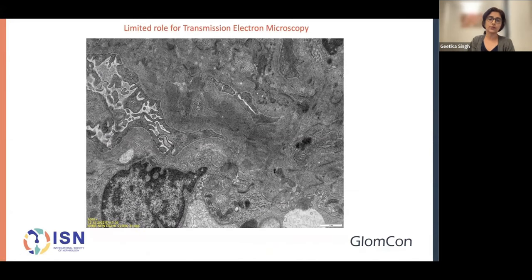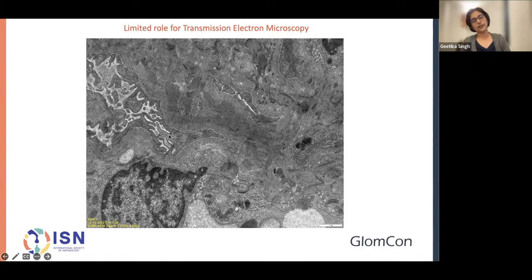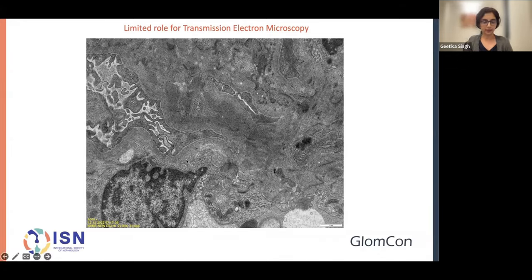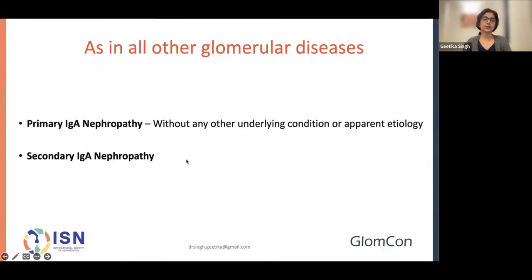There is a limited role for electron microscopy in terms of confirming the presence of conventional immune-type deposits that you can see in the mesangium, as well as commenting on podocyte health, which becomes important especially when patients are frankly nephrotic. That's what it is for the pathologist. As with all other glomerular diseases, we classify the disease the same way in IgA nephropathy.